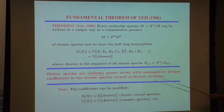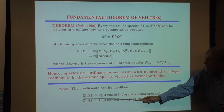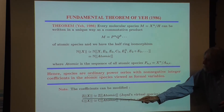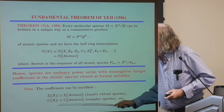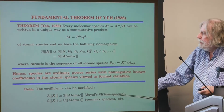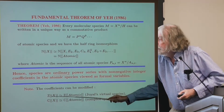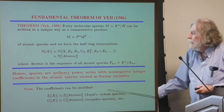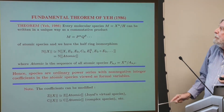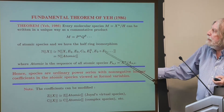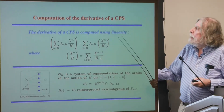Ordinary power series here is in an infinite number of variables, which are the atomic species. If you take only X, this is the normal power series. You can take integer coefficients, possibly negative or complex; allowing negative coefficients, you have Joyal's virtual species.